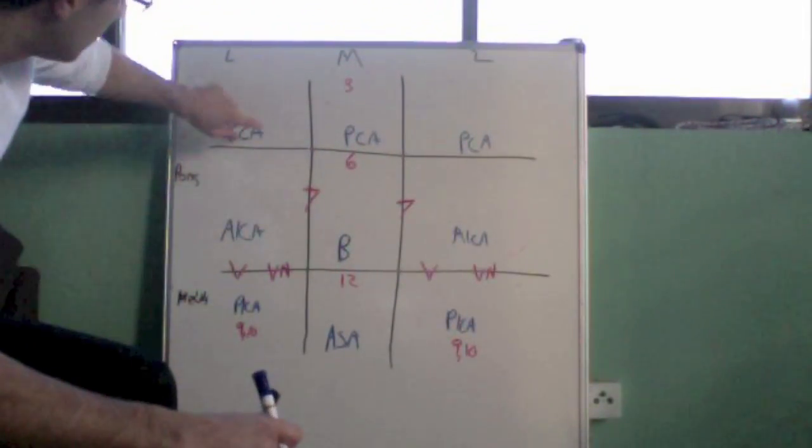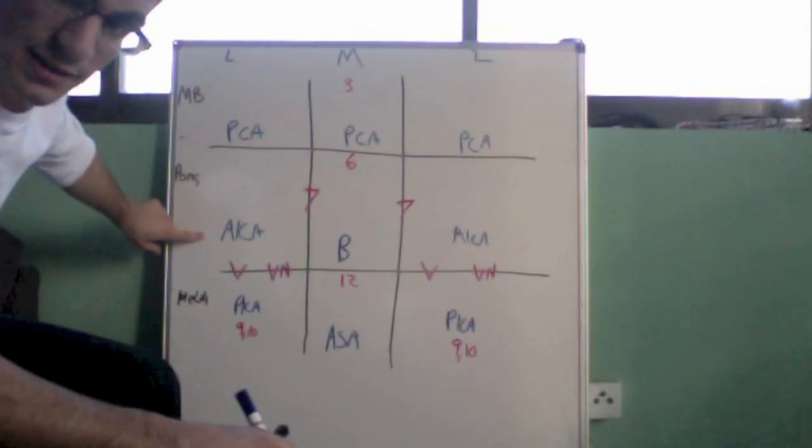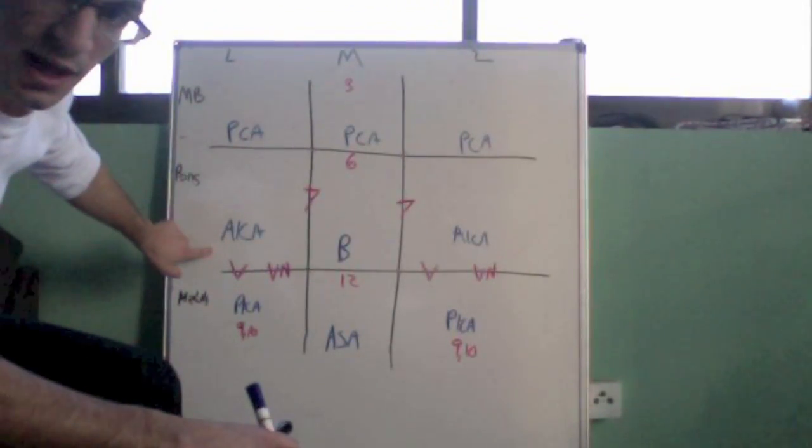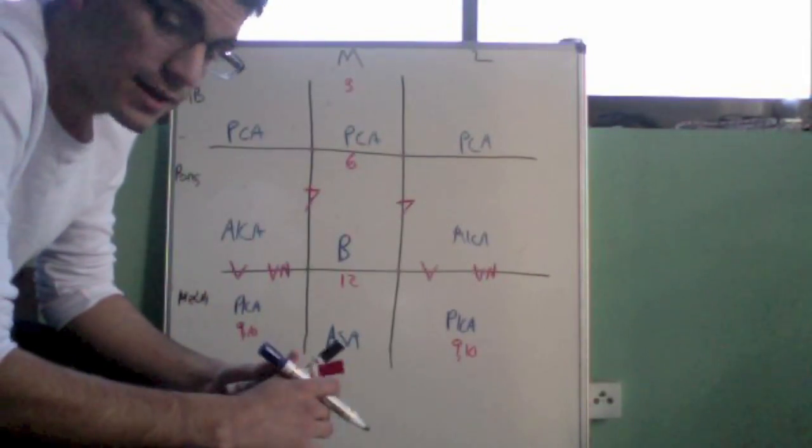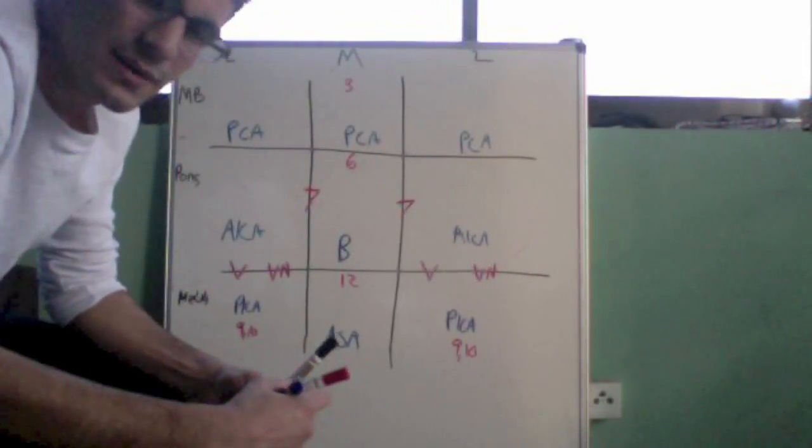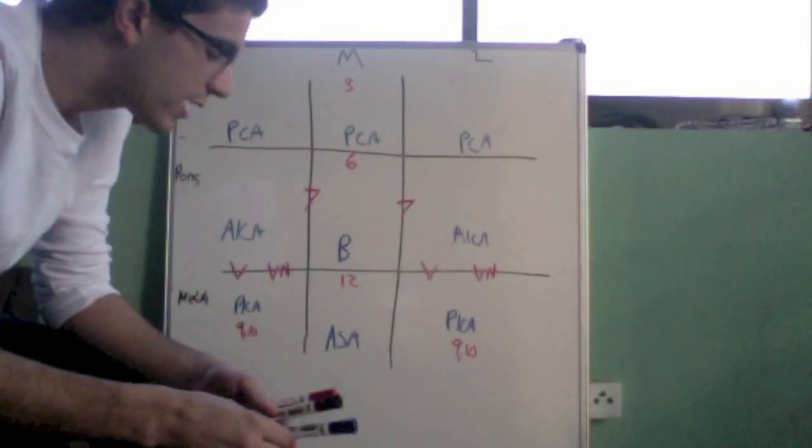Then we can narrow it down to, oh, this must be affecting the lateral pons. An AICA must be the artery that's blocked. And that applies for each section. So after this, there is more to fill in, but I just wanted you to get an idea of where we're going with all this.